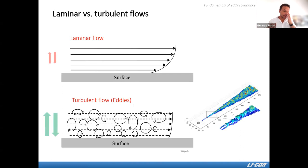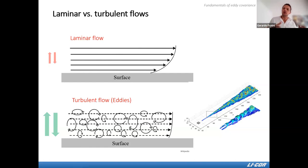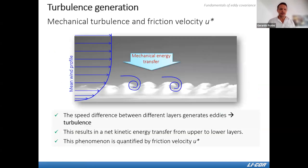Turbulence in the atmosphere: there are two states of flow — laminar and turbulent. Laminar flow is when the fluid moves parallel to a surface in layers with no mixing between them. Turbulent flow has a mean horizontal flow but also movement up and down due to eddies. You can see a 3D simulation showing these vertical structures.